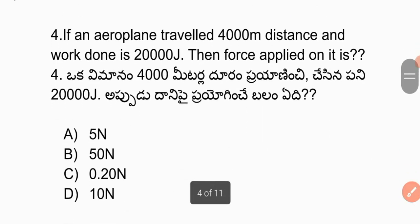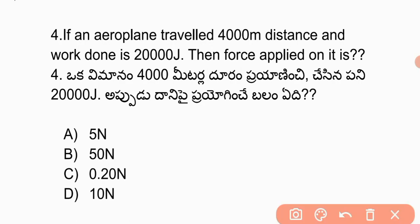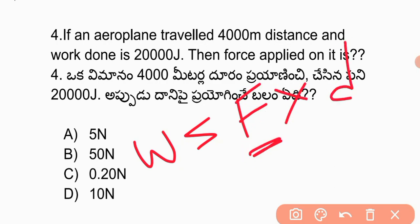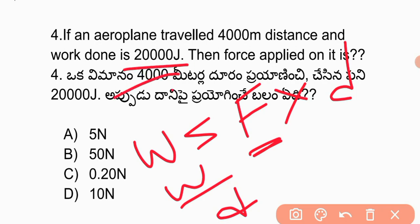The next question: if an aeroplane travels 400 meters distance and work done is 20,000 joules, then the force applied on it is? Using W = force into displacement, force equals 20,000 divided by 400, which equals 50 Newtons.